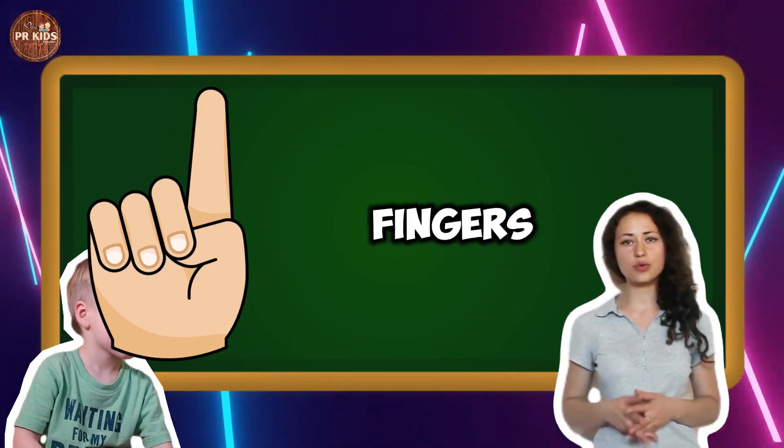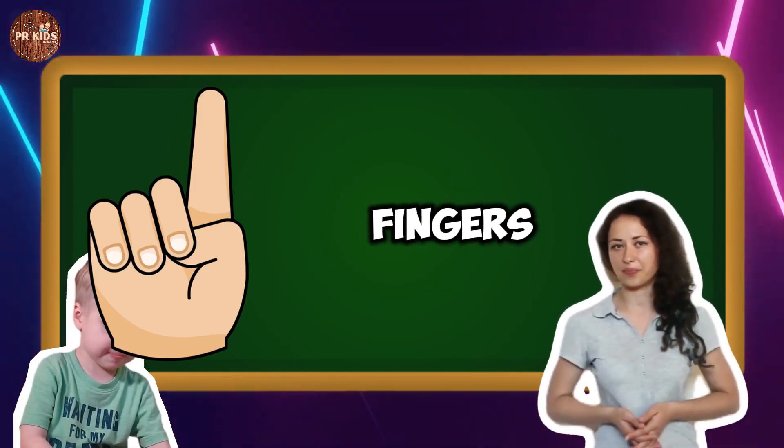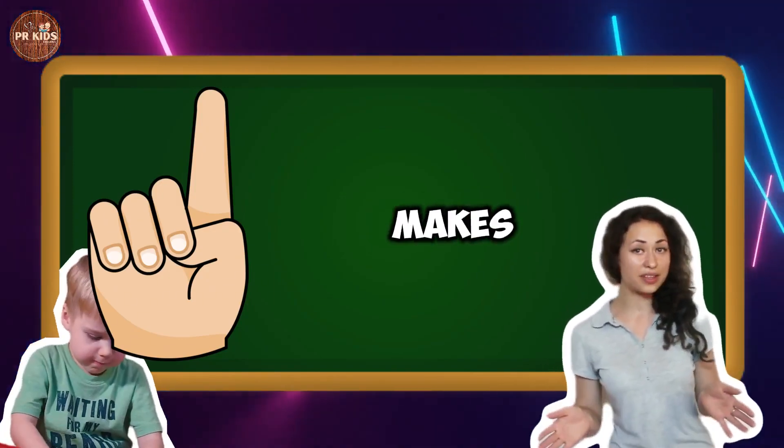One finger plus two fingers makes three fingers. Two plus three makes five.